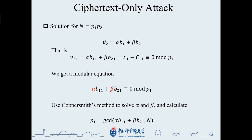The target vector v2 can be written as a linear combination of vectors b1 and b2, where b1 and b2 denote the first two vectors output by the LLL algorithm. The modular equation alpha b11 plus beta b21 mod p1 equals zero according to the first element of the vector. Then we can use Coppersmith's method to solve alpha and beta, and calculate the greatest common divisor of v21 and n, which is the p1 we want.